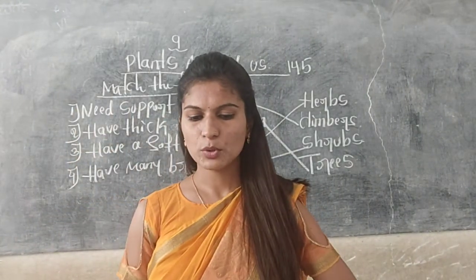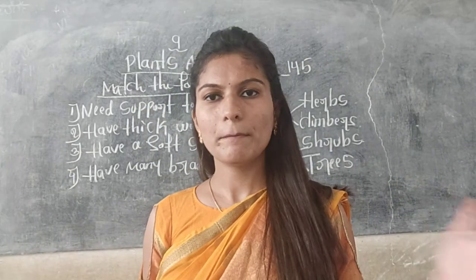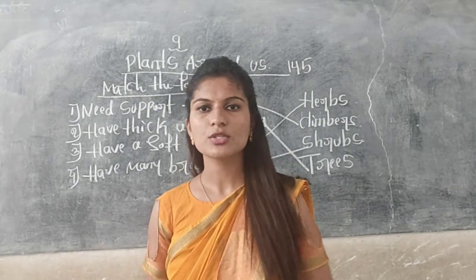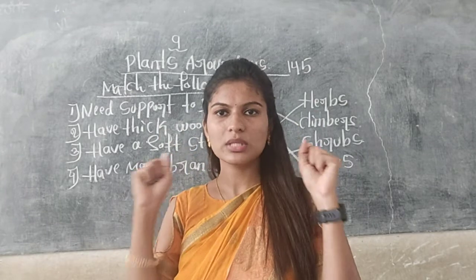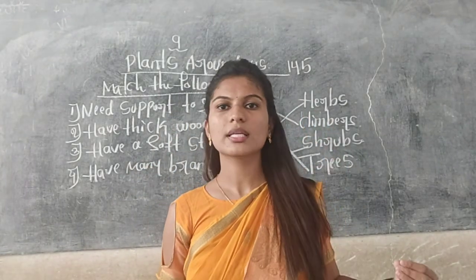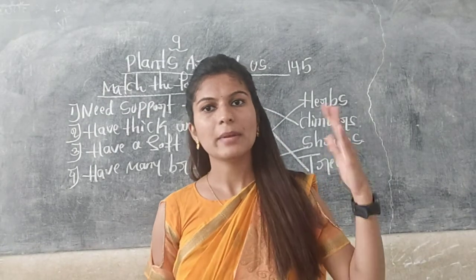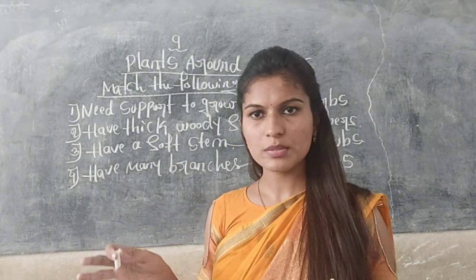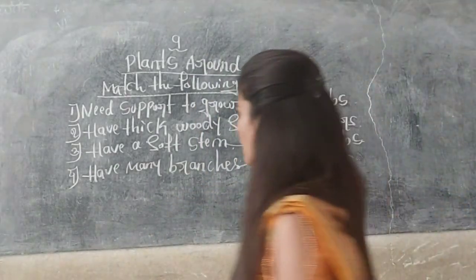Now it's time to discuss the parts of a plant. Plants have several parts, just like our body. Our body has several parts — eyes, nose, mouth, hands, fingers, legs, toes. In the same way, a plant also has several parts. Let's study all of those parts one by one.